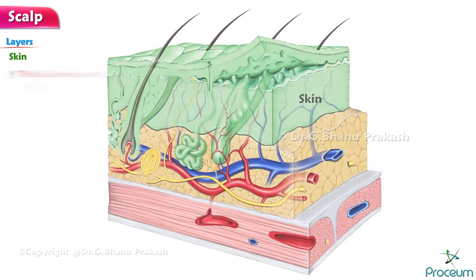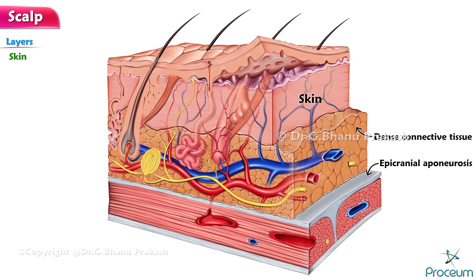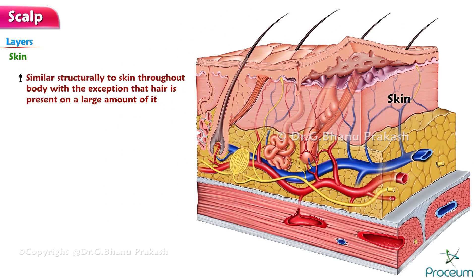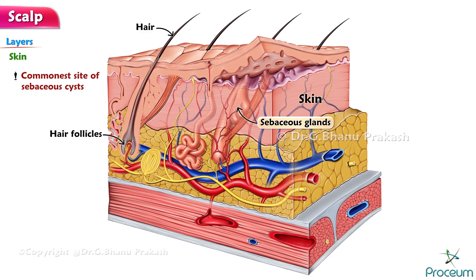The skin of the scalp is thick and hairy except over the forehead. It is firmly adherent to the epicranial aponeurosis by dense connective tissue of superficial fascia, as in palms and soles. Being hairy, it contains the maximum number of hair follicles and associated sebaceous glands. As a result, the scalp is the commonest site of sebaceous cysts. It also contains numerous sweat glands.